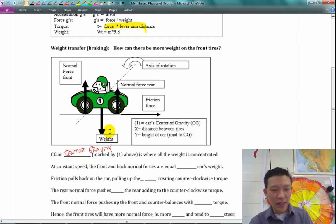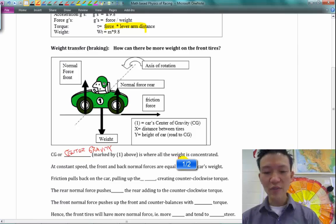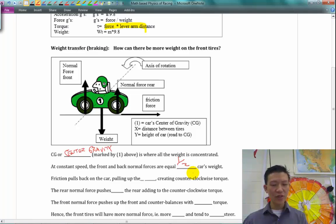At a constant speed, the front and back normal forces are equal. So ideally, let's say this car weighs 1,000 pounds, then how much should the front of the car versus the back of the car hold? They should each hold like 500 pounds. So when you're just sitting there, the front and back of the car should each hold about half the weight there.